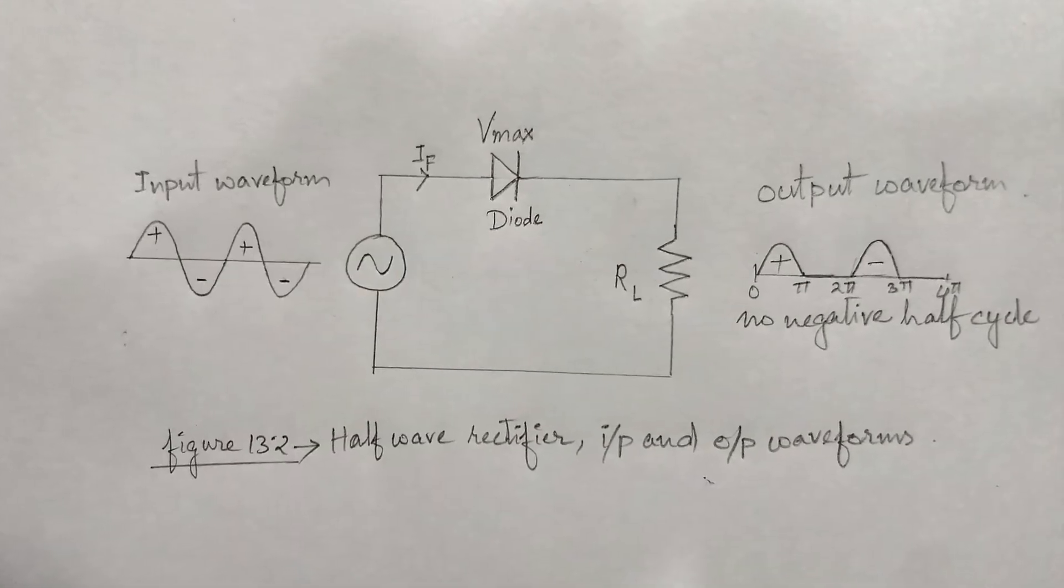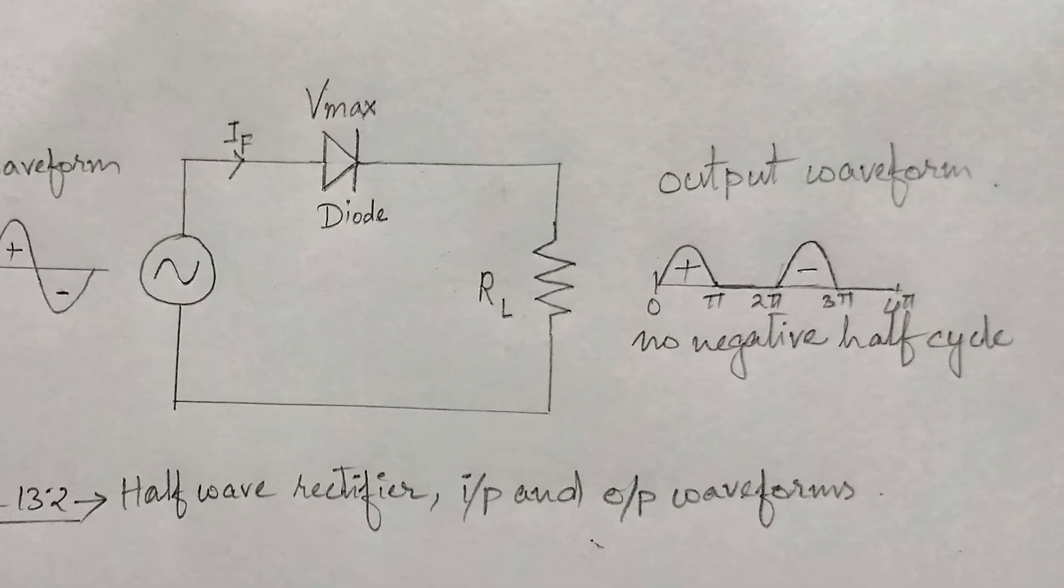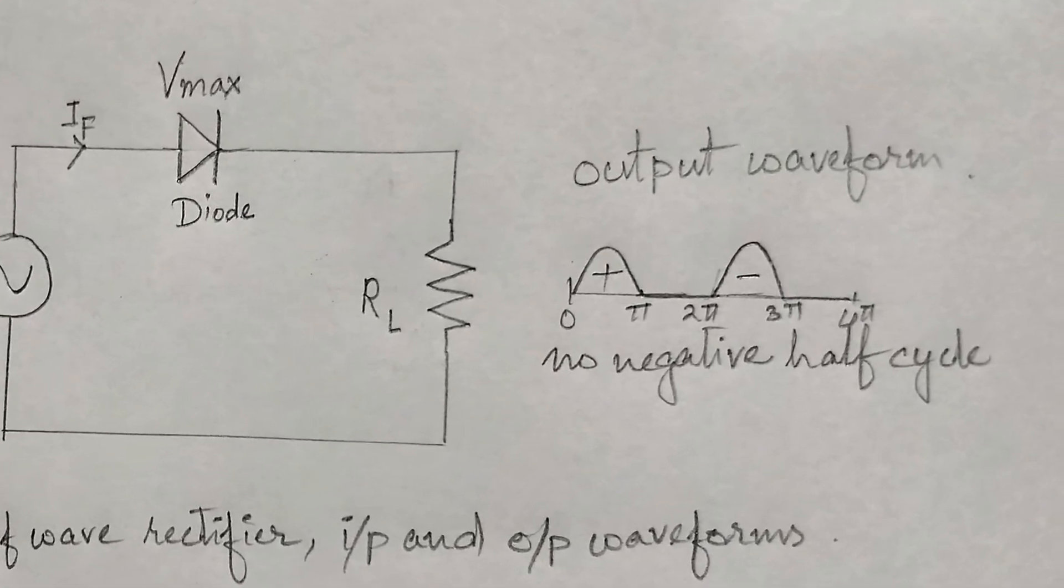In a half-wave rectifier, we get the output signal for half-time period of the input signal or waveform, as shown in this figure.